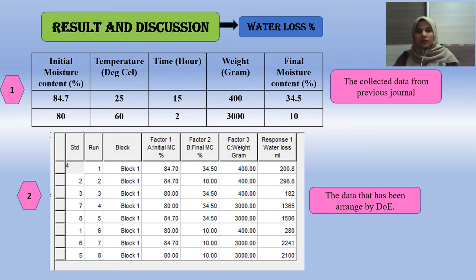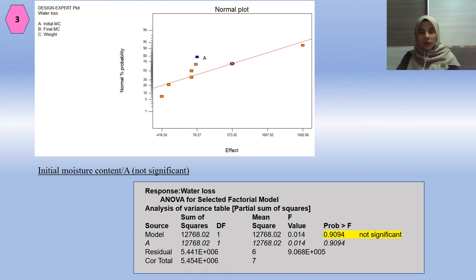For the result and discussion on water loss: after collecting data from previous journals, the data is input into DOE, which arranges it into a base mesh for each factor and each response. DOE produces a graph representing three factors — initial moisture content, final moisture content, and weight. From the normal plot for the three factors, the first factor is initial moisture content (OA), which is not significant because its probability value is larger than the F-value threshold of 0.5.